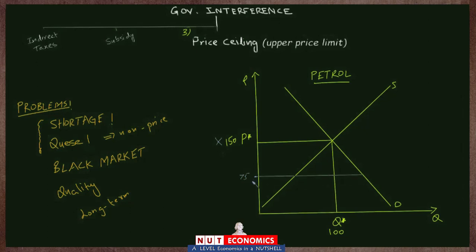Although producers are allowed to charge a price below 75, they will have no incentive to do so. So 75 is the new price in the market. At this new lower price of 75, the new quantity supplied is the horizontal distance from this price up to the supply curve — let's call that QS. We can clearly see that this quantity supplied is less than the 100 units supplied in the free market equilibrium. Let's assume this is a quantity supplied of 70.